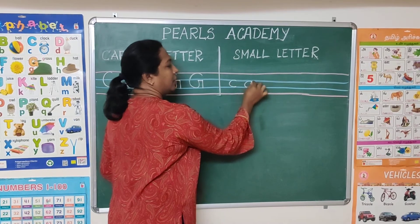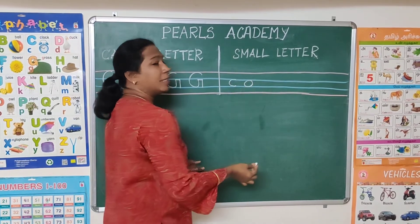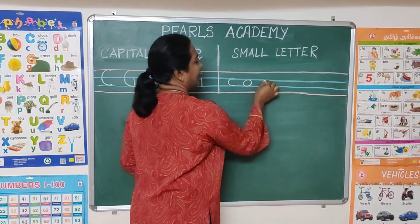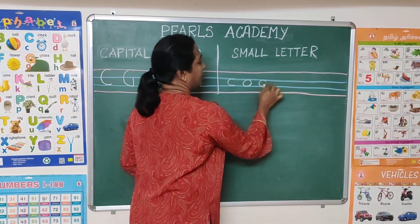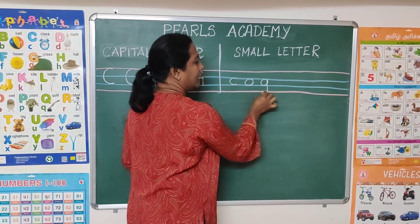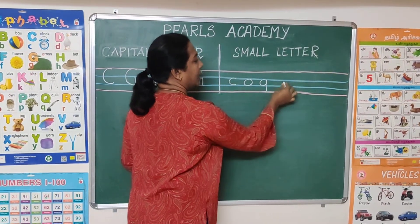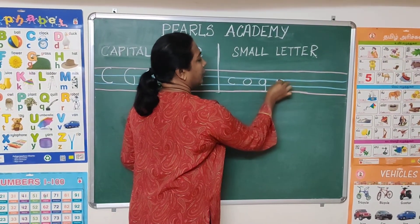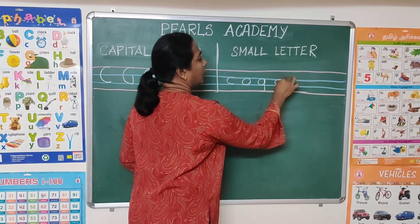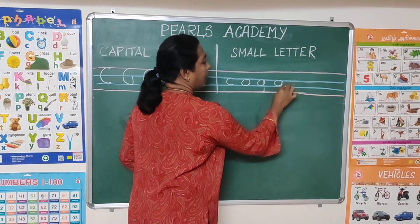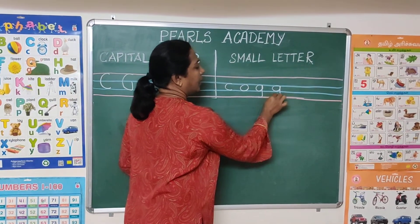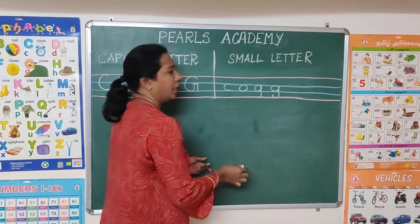Now next, draw a circle over there. The third step is draw a circle. Come down, touch the red line. The fourth step is go the same way. Come and touch the red line. Then a curve over there.